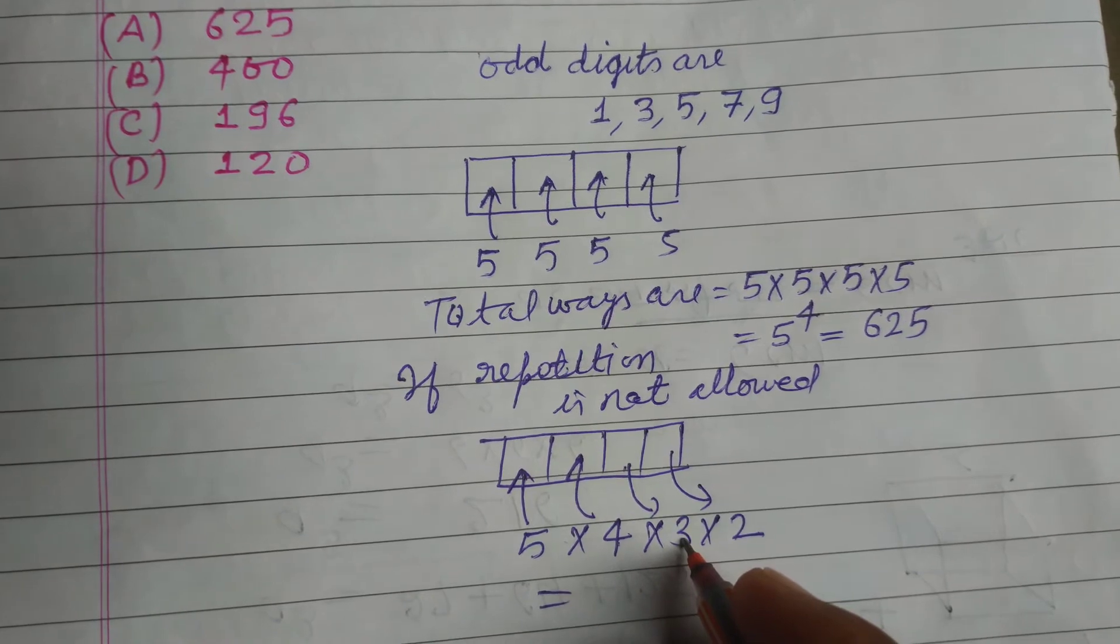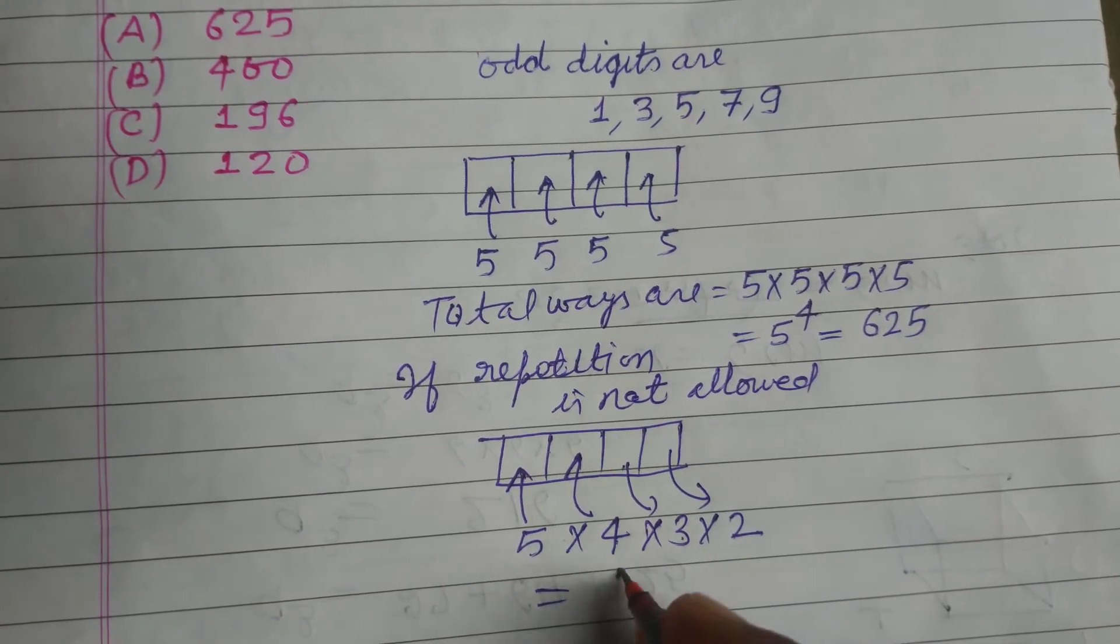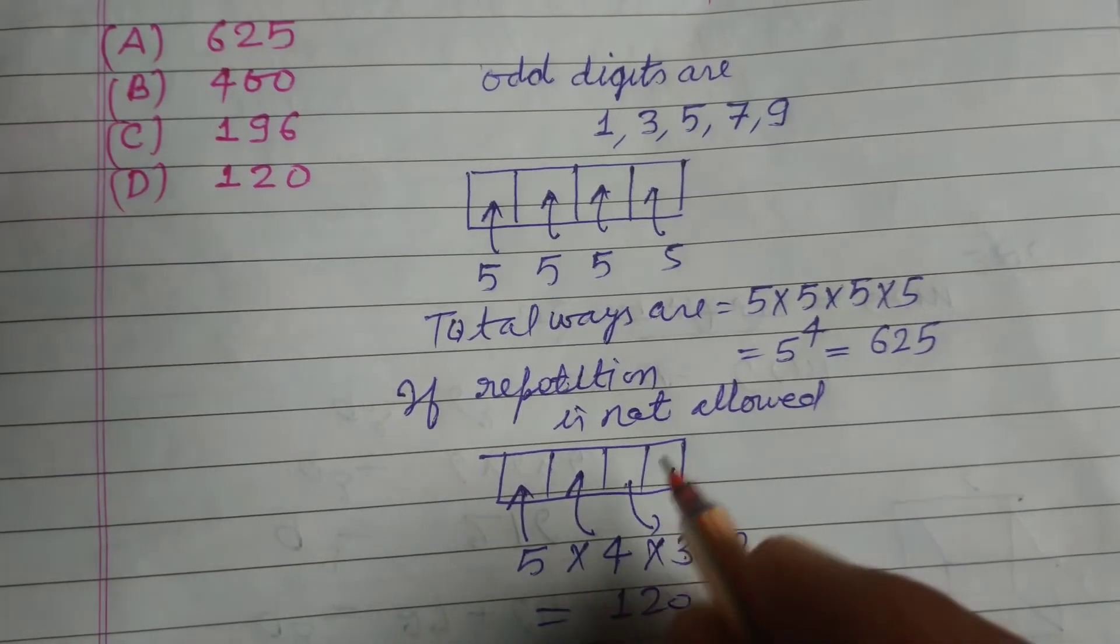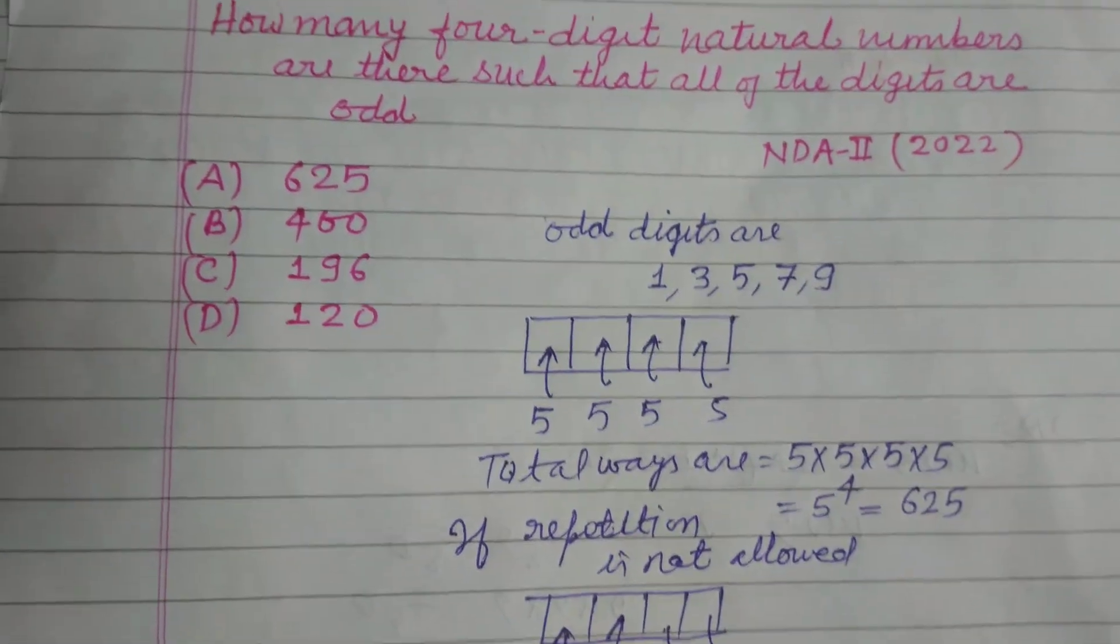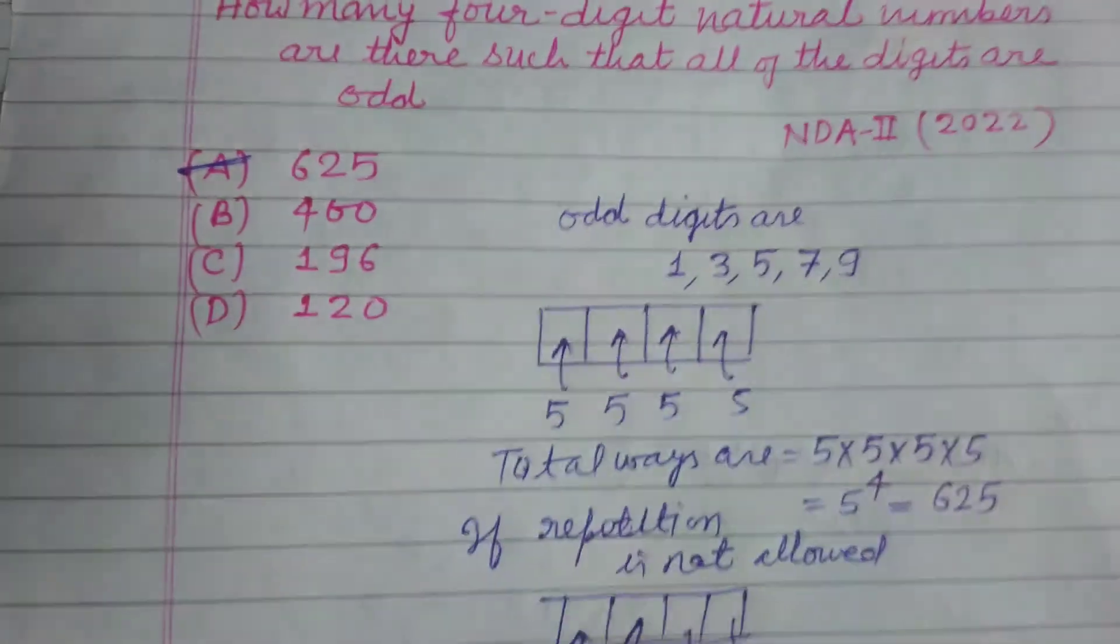So five times four is 20, times three is 60, times two is 120. But in the answer it is not given that repetition is not allowed, so the answer to this question is 625.